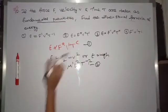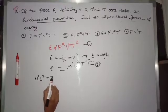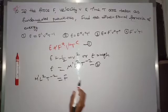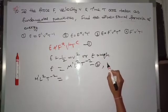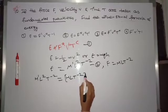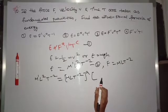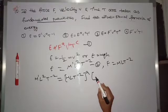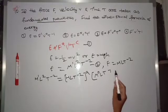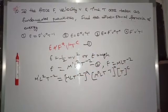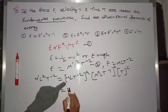Substituting into the equation: M¹L²T⁻² equals F^a · V^b · T^c. The dimensional formula for force is MLT⁻², and for velocity it is M⁰LT⁻¹, and for time it is T. So M¹L²T⁻² equals (MLT⁻²)^a · (M⁰LT⁻¹)^b · T^c.